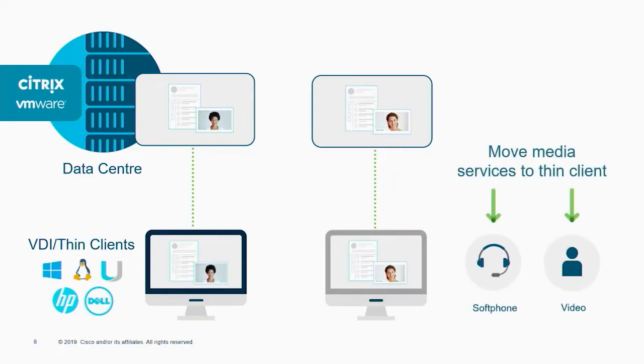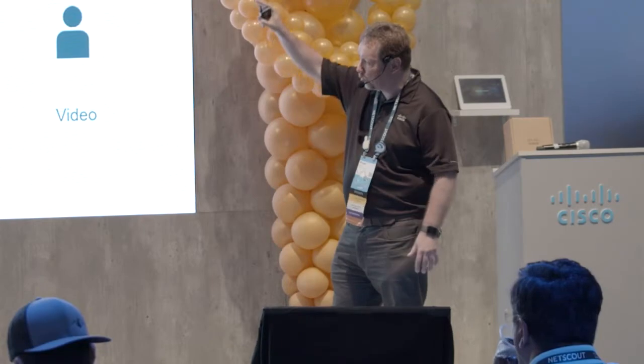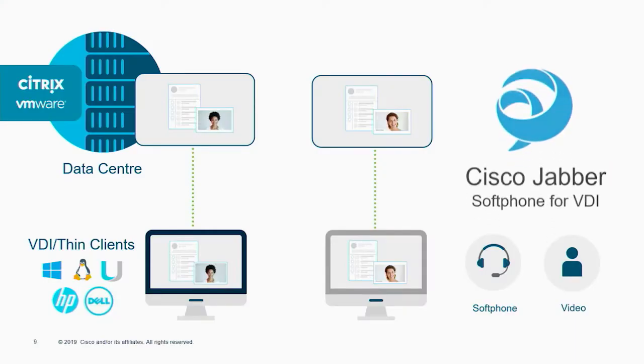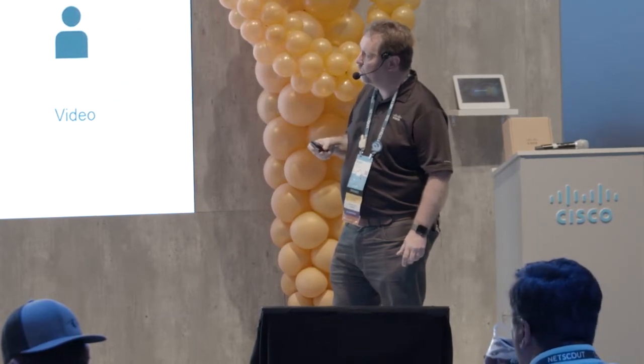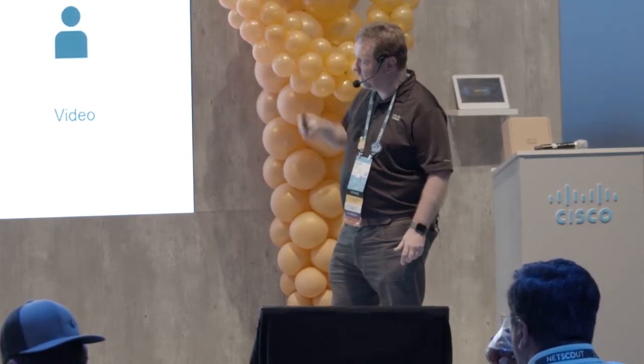Now, obviously I'm going to tell you it is possible to deliver unified communications in that environment. The way we do that is we can actually move the soft phone and video capabilities — so the media stack — down to the thin clients. We have a component which we call Cisco Jabber Softphone for VDI, and that does exactly that. It's a companion component that you actually run with Cisco Jabber clients running in the virtual machines in your data center.